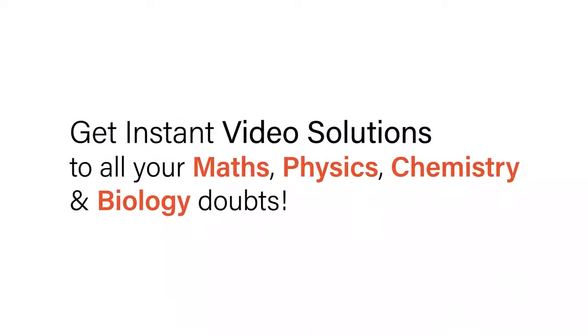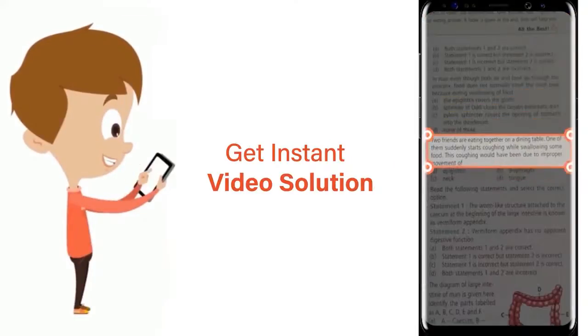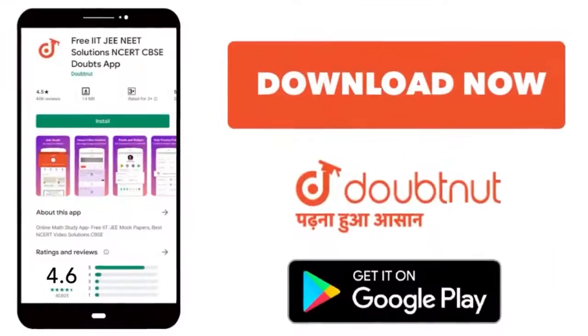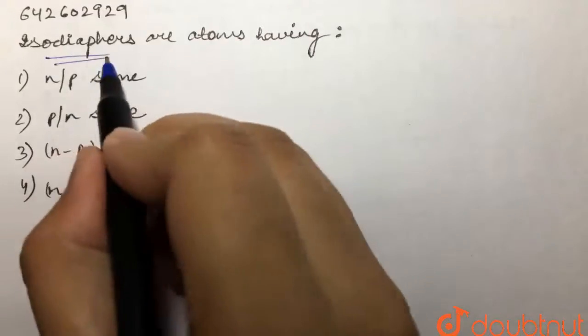With Doubtnet, get instant video solutions to all your maths, physics, chemistry, and biology doubts. Just click the image of the question, crop the question, and get instant video solution. Download Doubtnet app today. Our question is: isodiaphors are atoms having...